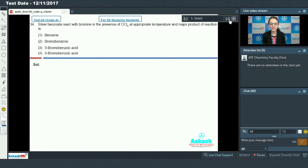Next question, question number 34: Silver benzoate reacts with bromine in presence of CCl4 at appropriate temperature. The major product of the reaction is...